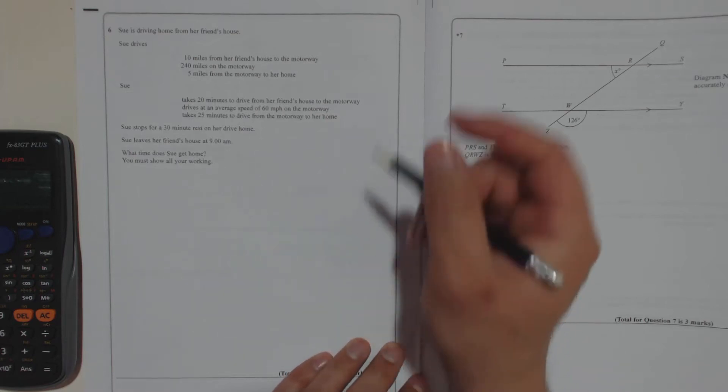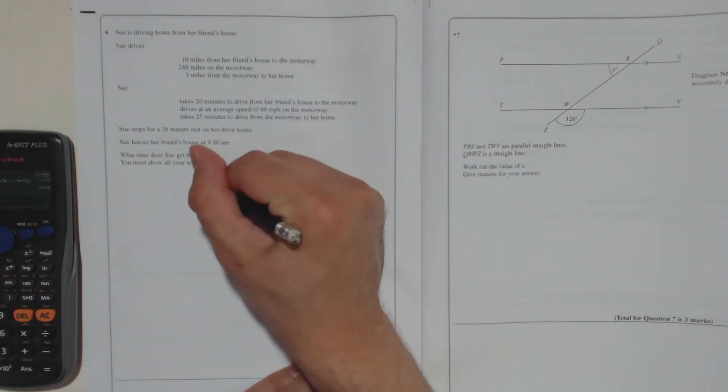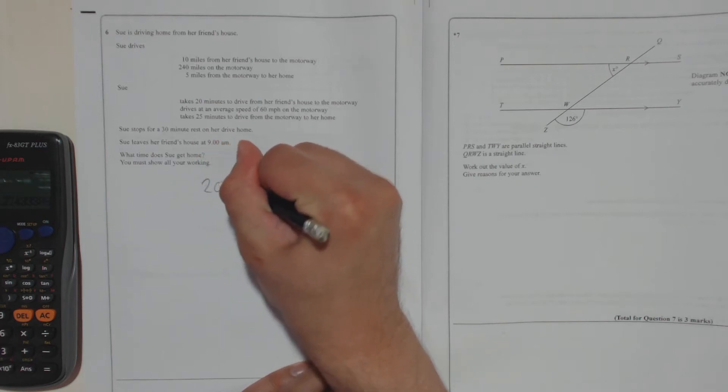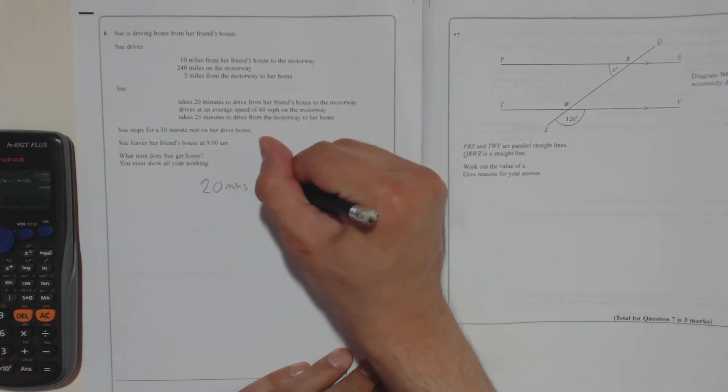Right, so we've got times for the first bit, the last bit, and a rest. So we've got 20 minutes. We've got the rest, which is 30 minutes.